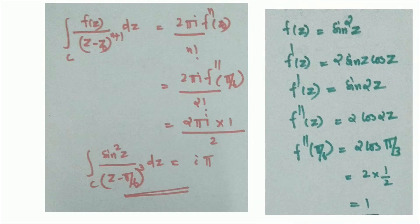We have f(z) = sin²(z). Its derivative is 2sin(z)cos(z). We can simplify: 2sin(z)cos(z) = sin(2z), so f′(z) = sin(2z). Its second derivative is f″(z) = 2cos(2z). Putting z = π/6: f″(π/6) = 2cos(π/3). Since cos(π/3) = 1/2, the answer is 2 × 1/2 = 1.